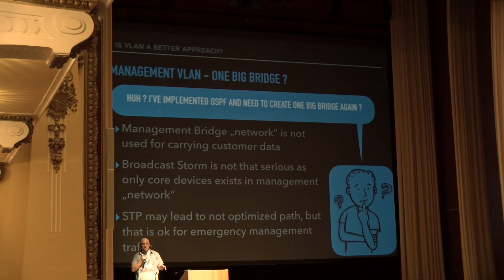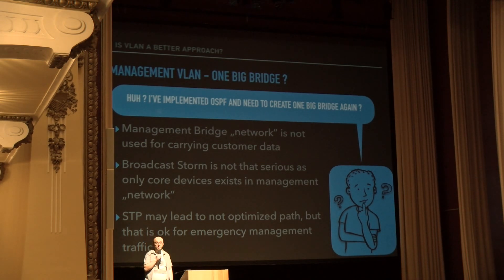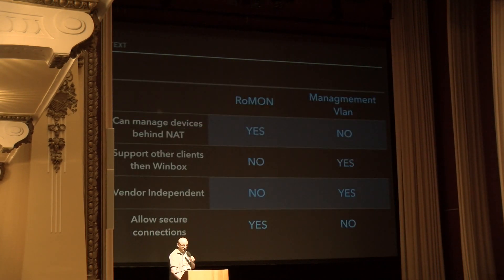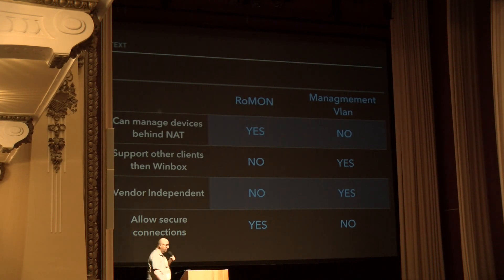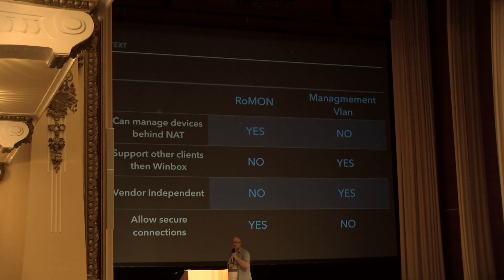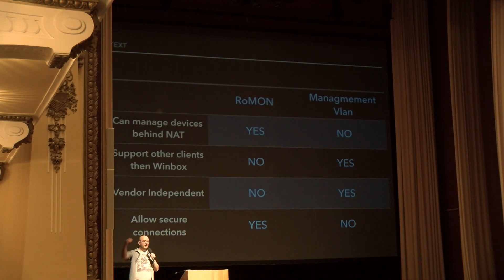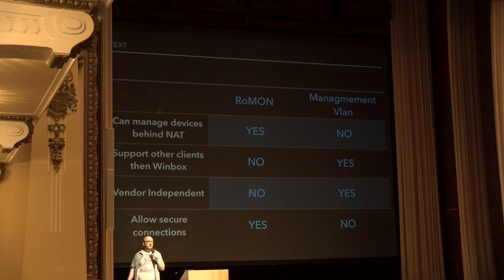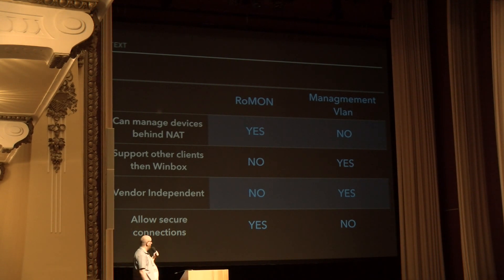So let's compare both approaches. ROMON is very useful if you don't have one big network — maybe you manage a couple of networks, like hotspots across the country. ROMON gives you very easy access to devices behind it: just connect to the ROMON device as the ROMON agent and discovery and management access work ideally. Using management VLAN for that scenario is technically possible but much harder to do. Can we use other clients than Winbox for ROMON? On standard PCs, definitely no. With management VLAN, the answer is obviously yes. VLAN is vendor-independent, but ROMON can give you encrypted sessions — so there are pros and cons.